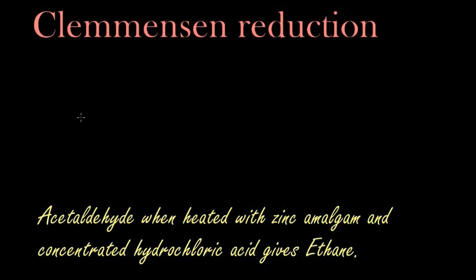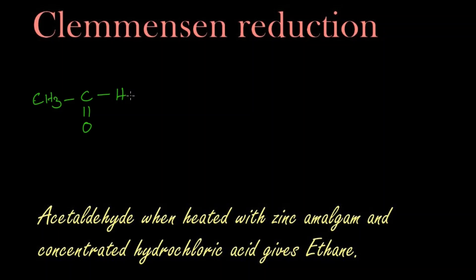In this video we are going to learn the Clemmensen reduction — that is, we are going to reduce an aldehyde. We take acetaldehyde in the presence of zinc amalgam and concentrated HCl. Let's write the reaction: CH3C double bond O — this is acetaldehyde.